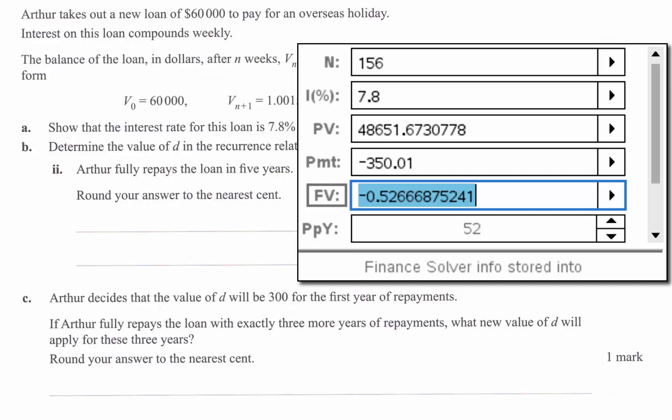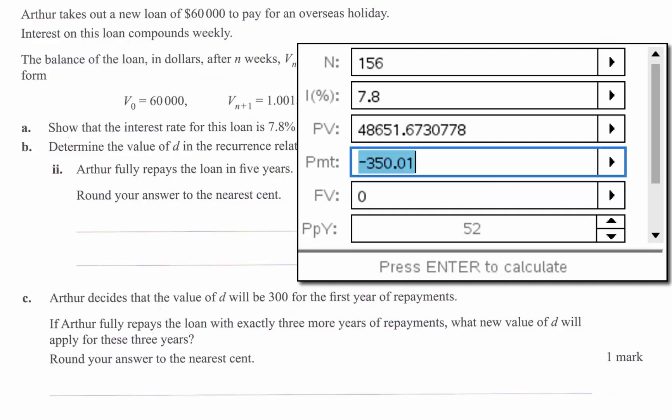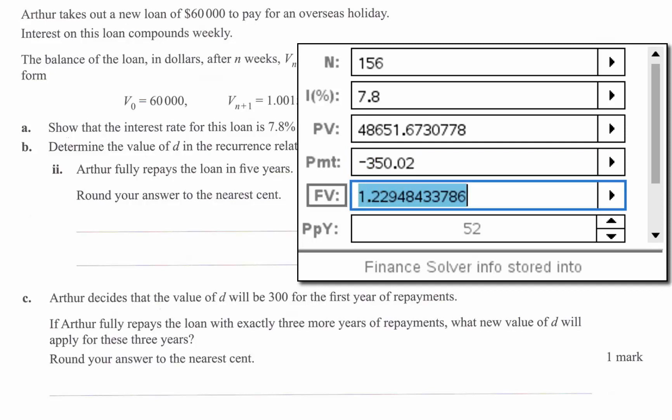So if you have to choose a value of D to fully repay the loan as per the question, the best value to choose would actually be to round it to 350.02 and then you're overpaying the loan by $1.23. But at least you have fully repaid the loan.